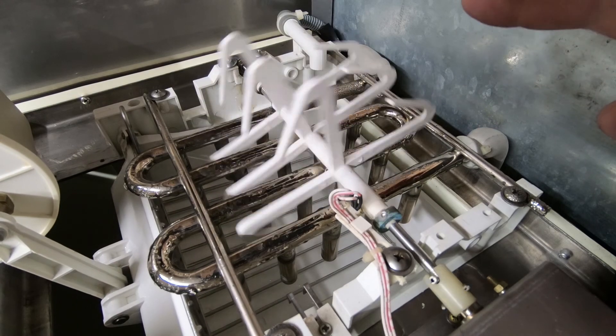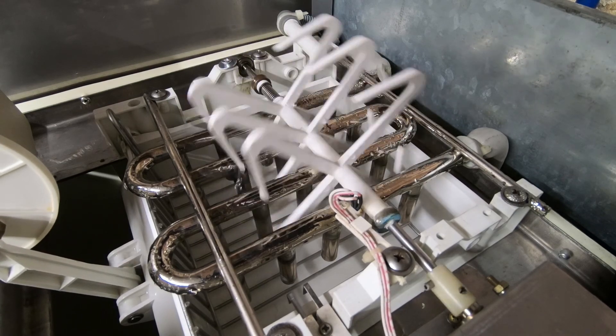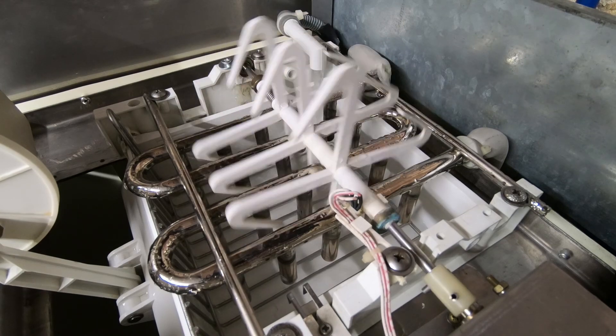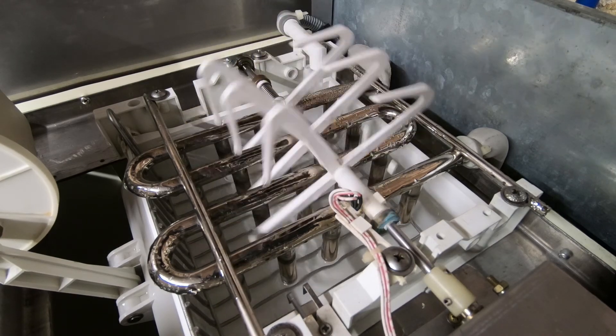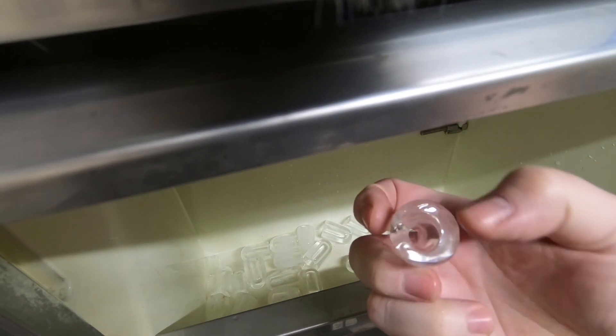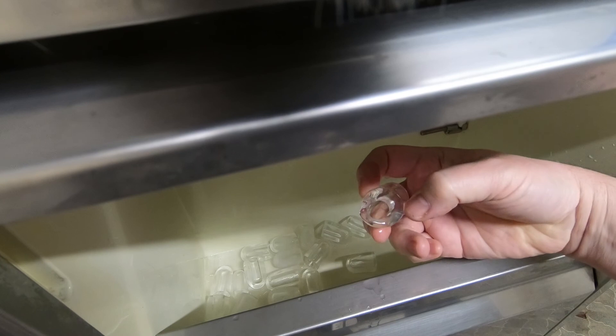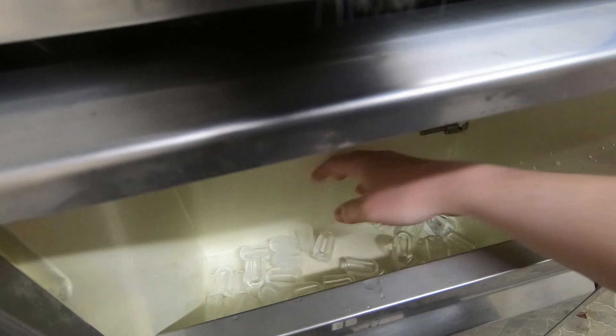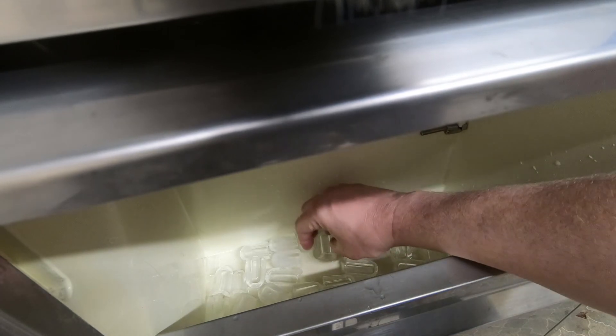So this is the ice that's produced, you can see the hole in the center. I actually think this works well especially with drinks because it's more surface area to the ice in the glass.